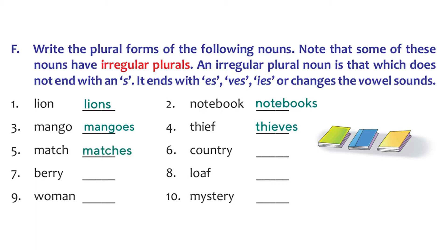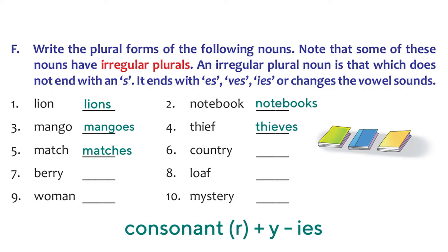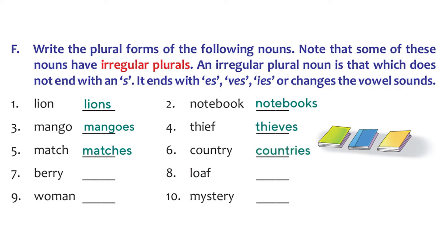The next one is country. It has a Y at the end. Any word that ends with a consonant plus Y, we need to add IES. So to get the plural form of country, we write C-O-U-N-T-R-I-E-S - countries. The next one is similar - it's berry. We need to get berries, spelled B-E-R-R-I-E-S, because the word ends with Y again.